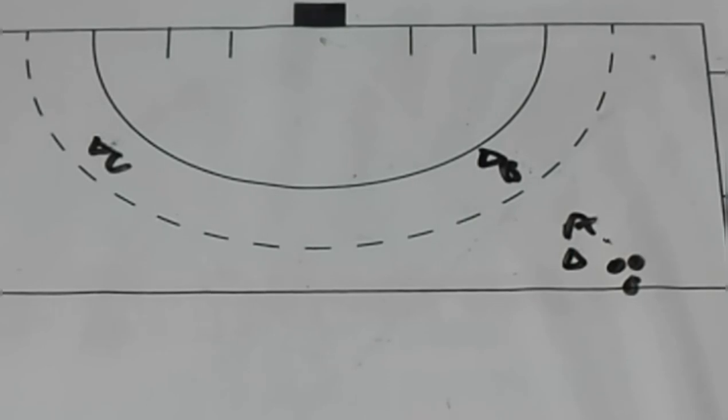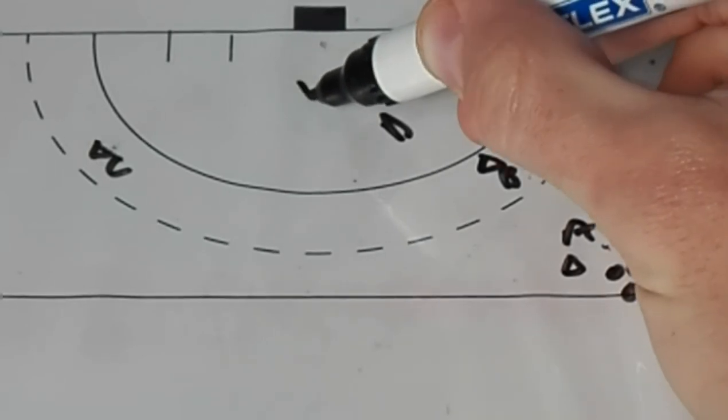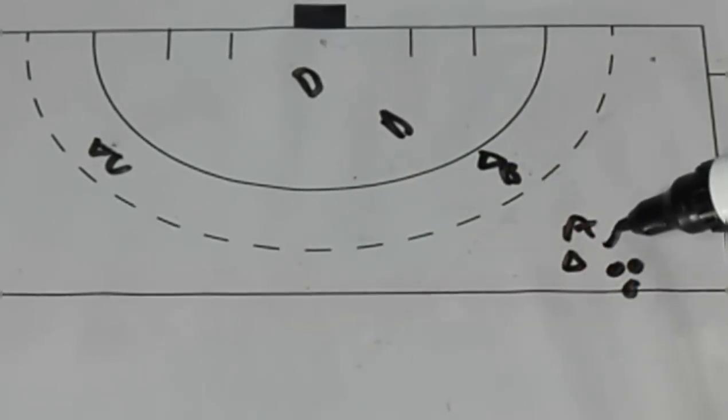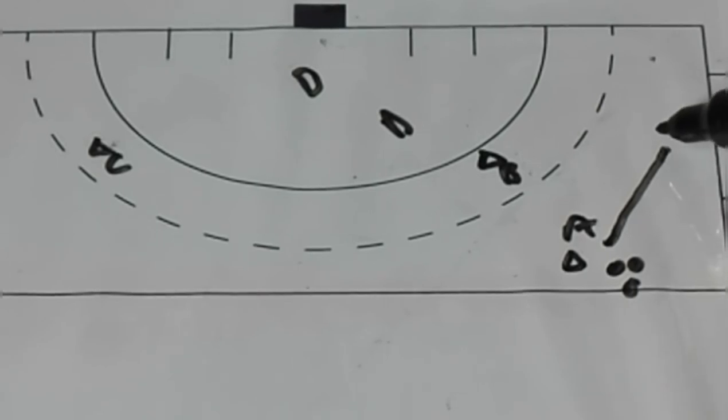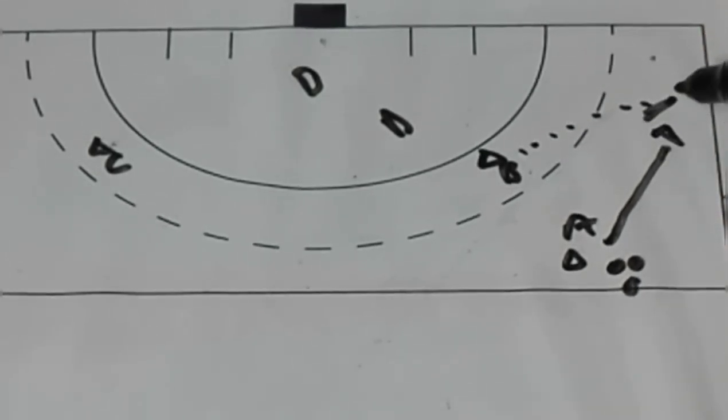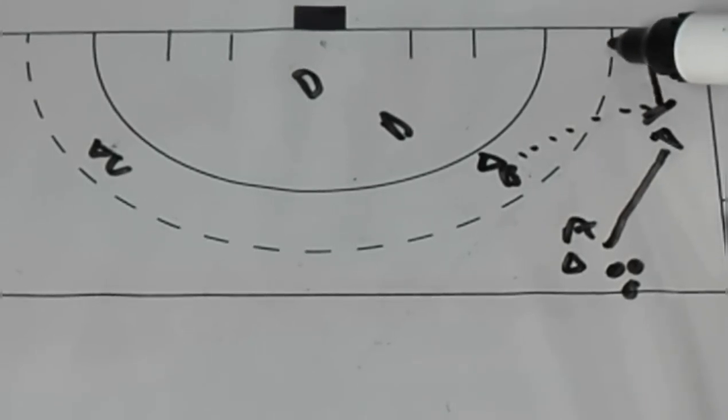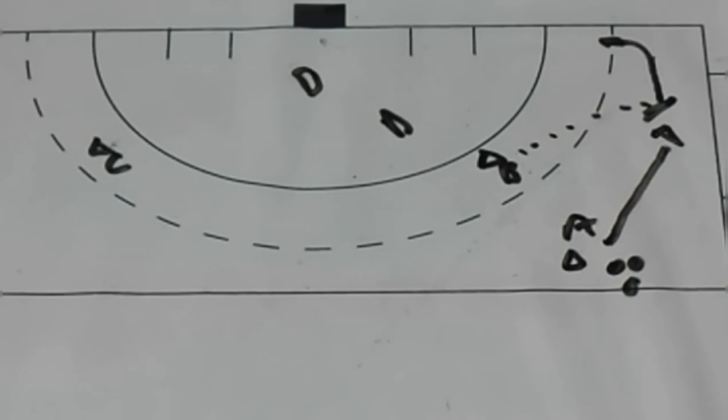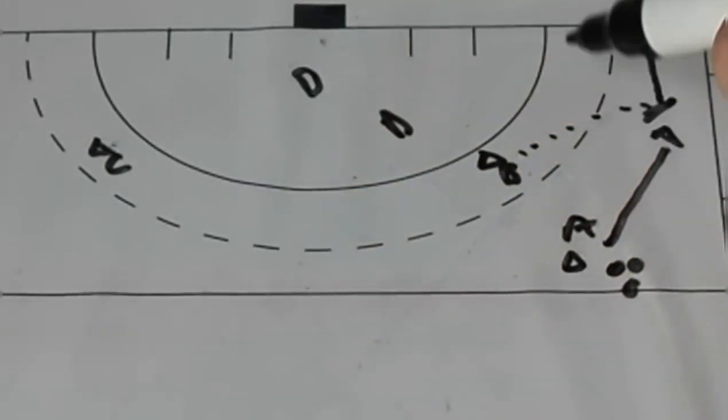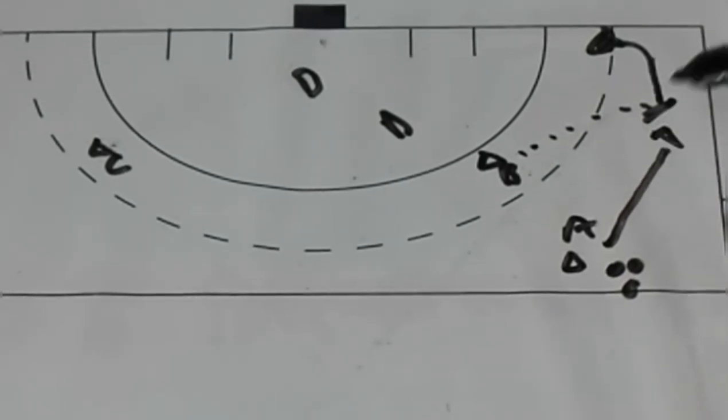The next variation you can do in this drill is you can put two defenders in. Player A will pass the ball into the space. Again player B will receive in that space. As soon as player B drives and passes this dotted line it becomes a 3v2 towards goal. You can use that for the next variation.